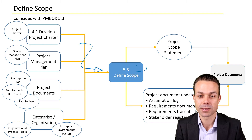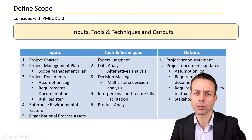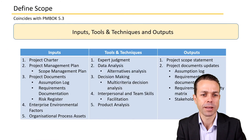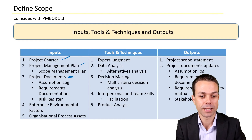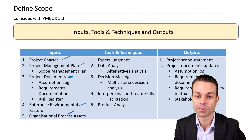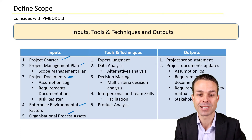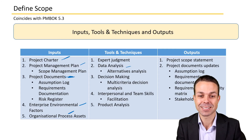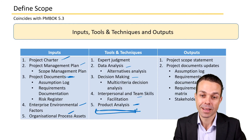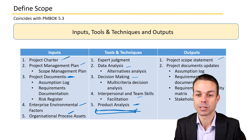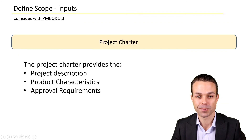There are many inputs into the Define Scope process, and the process itself will produce the project scope statement and other project document updates. Inputs, tools and techniques, and outputs for Define Scope include: the project charter, project management plan, project documents, enterprise environmental factors, and organizational process assets as inputs; and expert judgment, data analysis, decision making, interpersonal and team skills, and product analysis as tools and techniques.